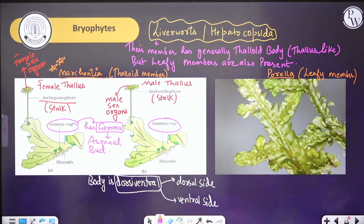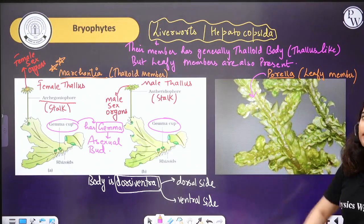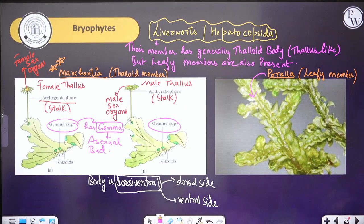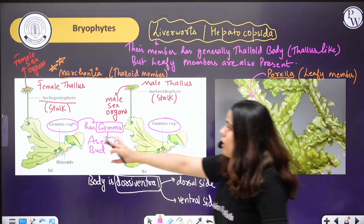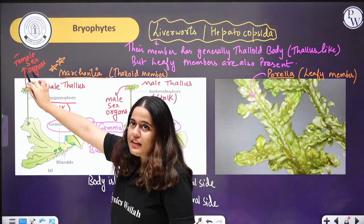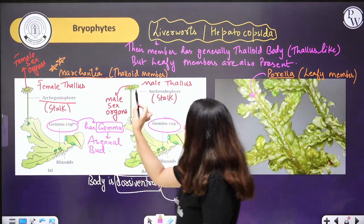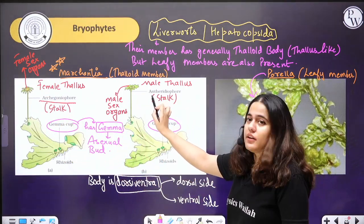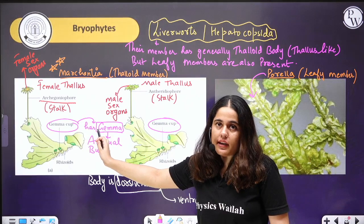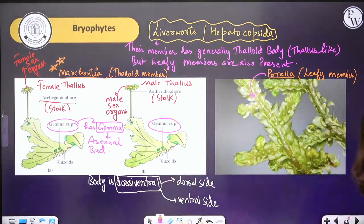Sexual reproduction is done through male and female sex organs, and asexual reproduction is done mostly through gemmae. Marchantia and Porella are the two examples of liverworts. In the female body, the female sex organ is present; in the male body, the male sex organ is present. The stalk with female sex organ is the Archegoniophore; the stalk with male sex organ is the Antheridiophore; and there is a gemma cup structure containing gemmae that help in asexual reproduction.